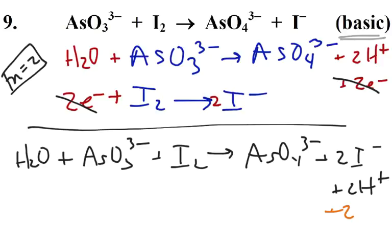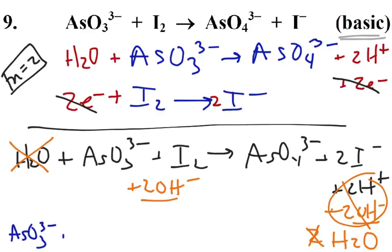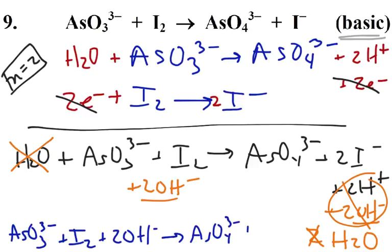The H pluses are going to bump into two hydroxide ions, and that will turn into two waters. Since I added two hydroxides to the right side, I have to add them to the left side. Now I have two waters on the right and one water on the left, so I'm going to eliminate that water and eliminate the two. My final equation is AsO3 three-minus, plus I2, plus two OH minuses, turns into ASO4 three-minus, plus two I minus, plus H2O.